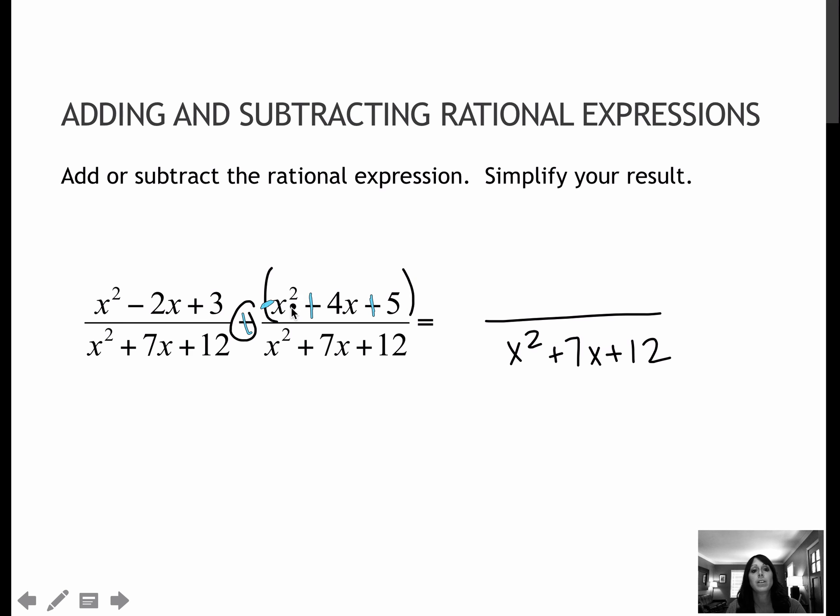So I have an x squared and a minus x squared. That cancels to 0. I've got a minus 2 and a plus 4, which cancels to plus 2 or reduces to plus 2x. And I've got a plus 3 and now a plus 5, which gives me plus 8.